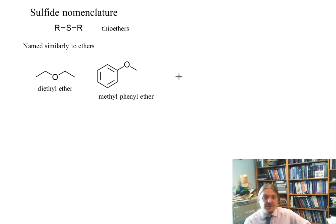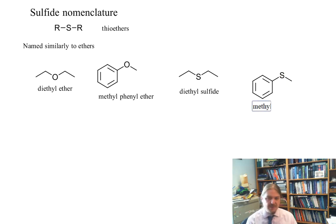And if we change the oxygen to a sulfur, all we would do is change from diethyl ether to diethyl sulfide. And to change methylphenyl ether from oxygen to sulfur, we now have methylphenyl sulfide.